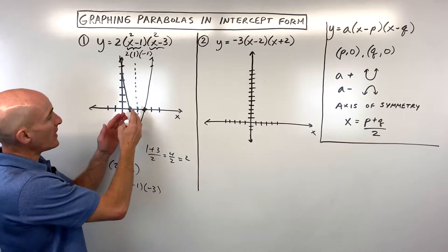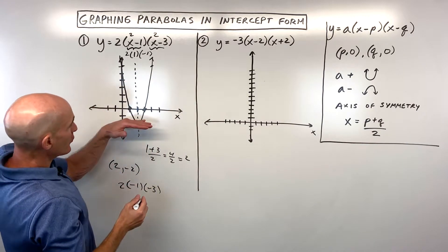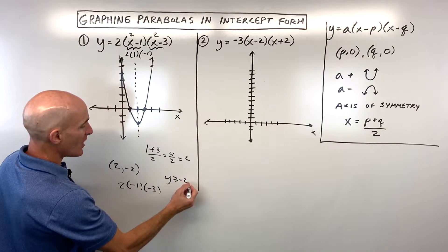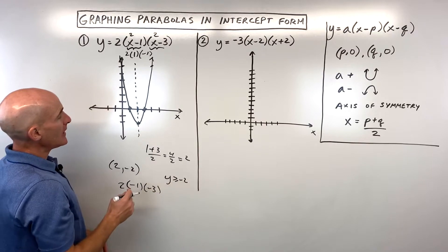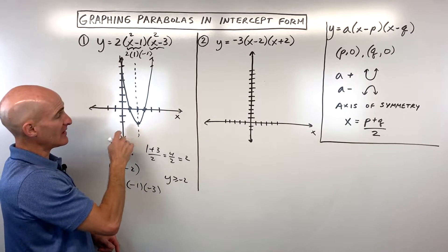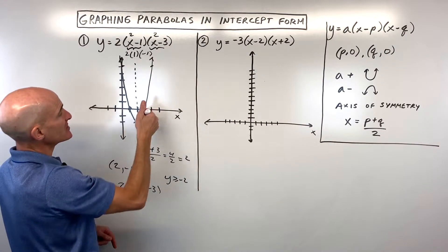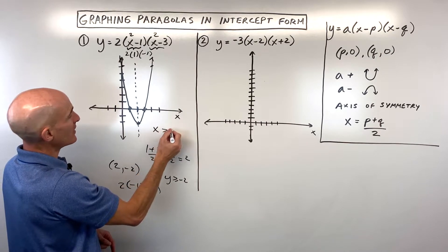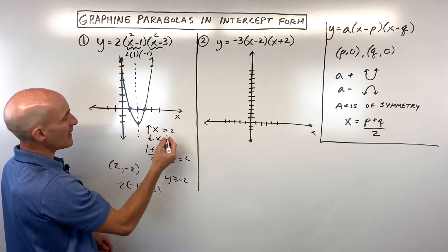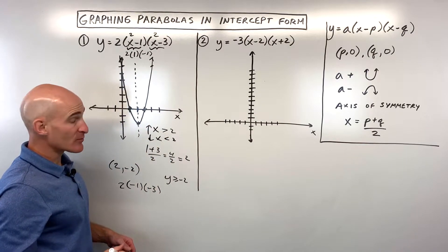Your teacher might ask: what's the domain? That's all real numbers because the graph goes left and right forever. The range is y greater than or equal to negative two. This graph has a minimum at negative two. It's increasing when x is greater than two, and decreasing when x is less than two.